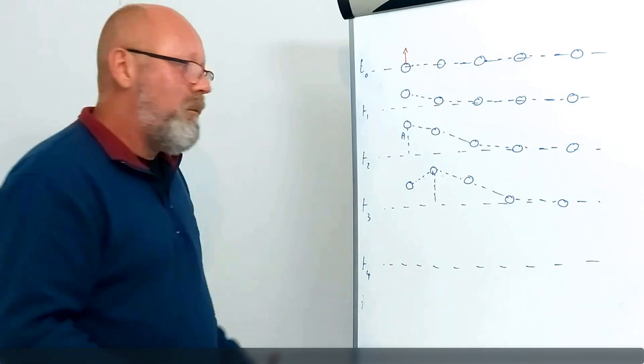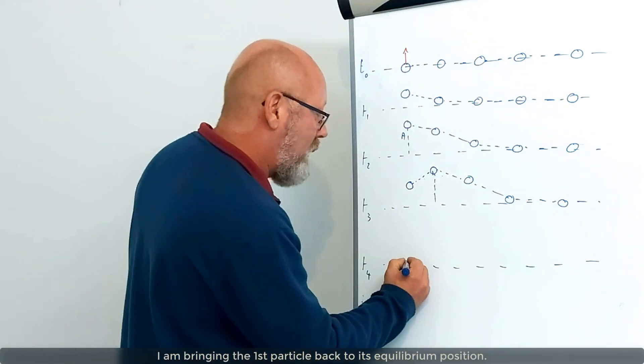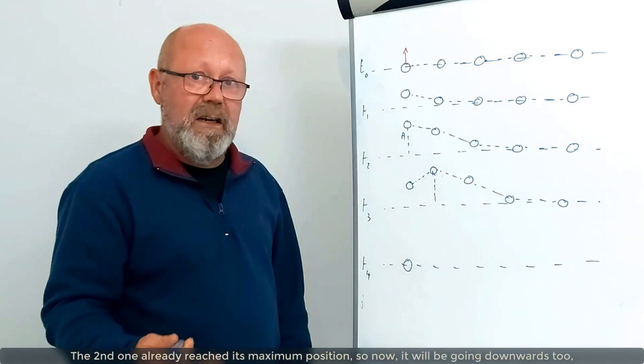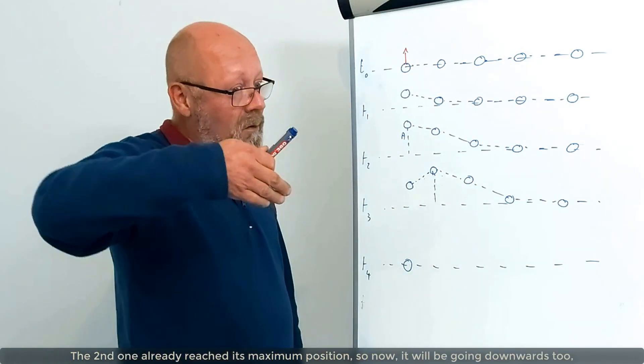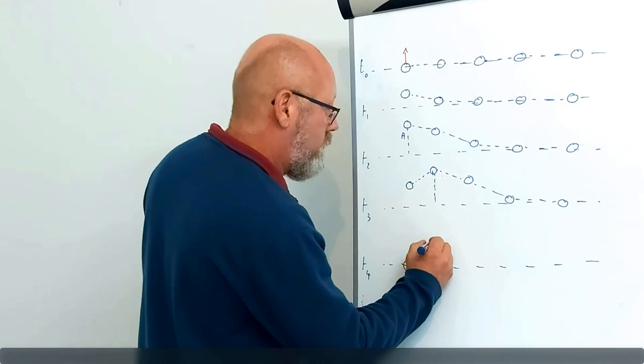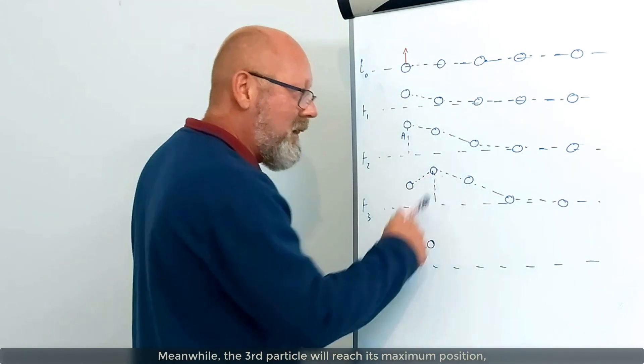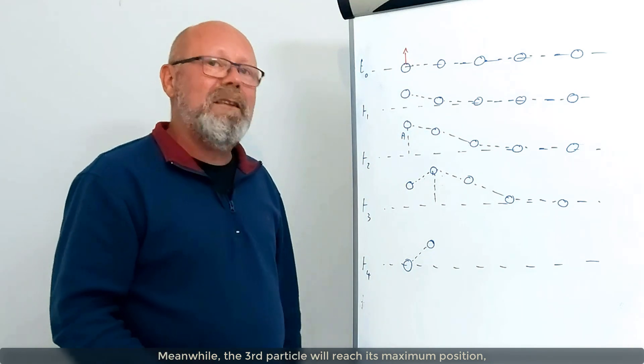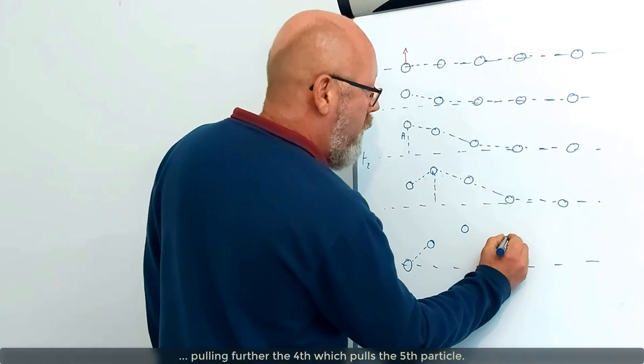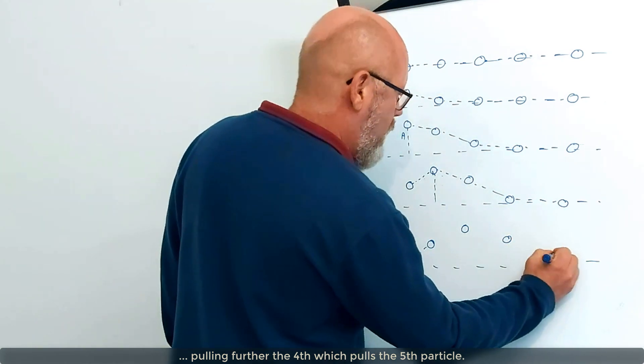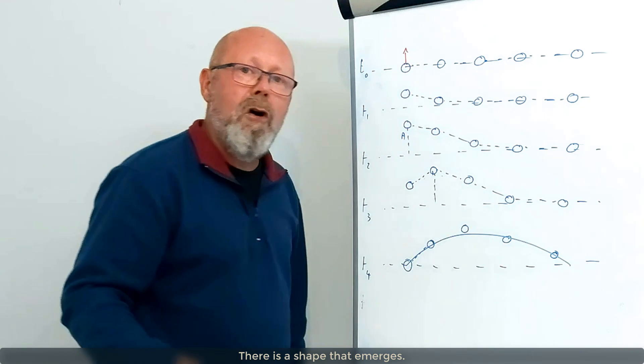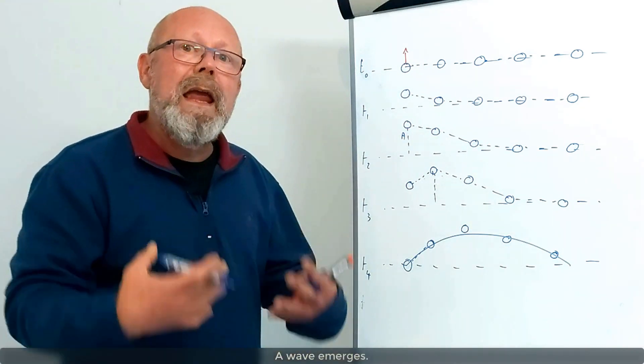Now, let's continue. And I'm bringing this particle back to its equilibrium position. Well, this one already reached its maximum. So, now it's going to go down too, pulled by the first particle. While this particle, now, will reach the maximum position, pulling even more the fourth particle, which pulls the fifth. And what do you observe here? Is a shape that emerges. A wave emerges.